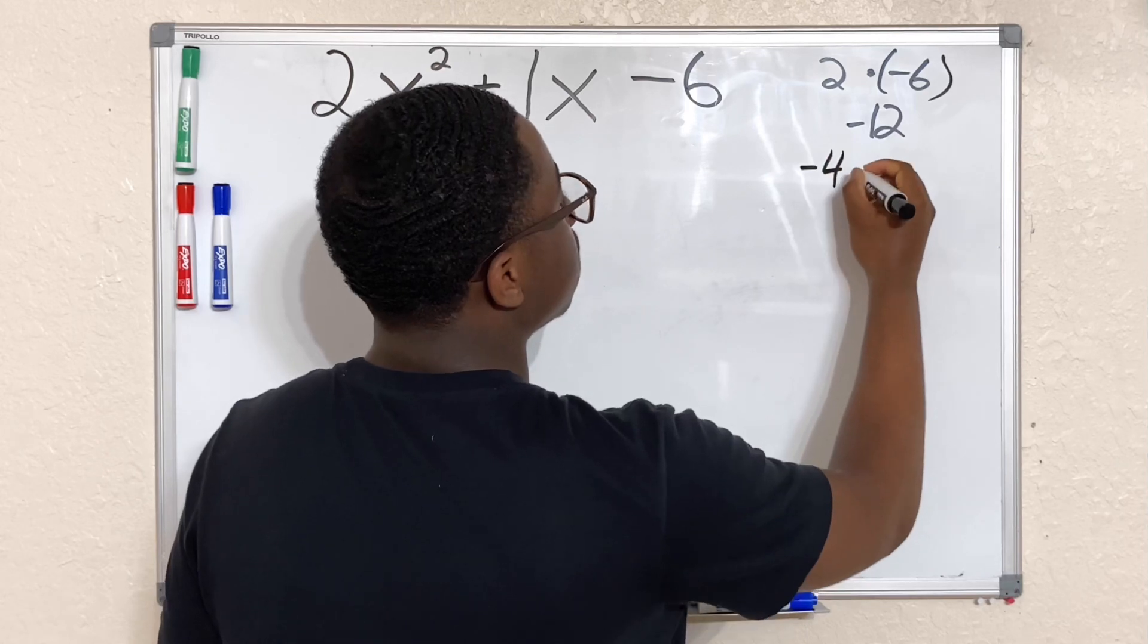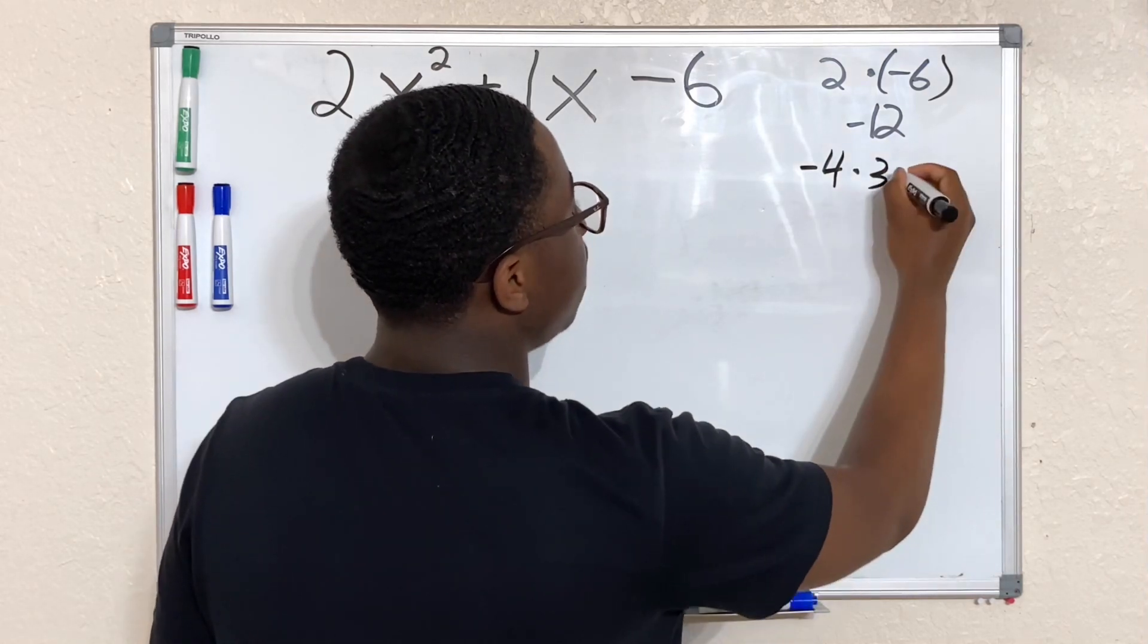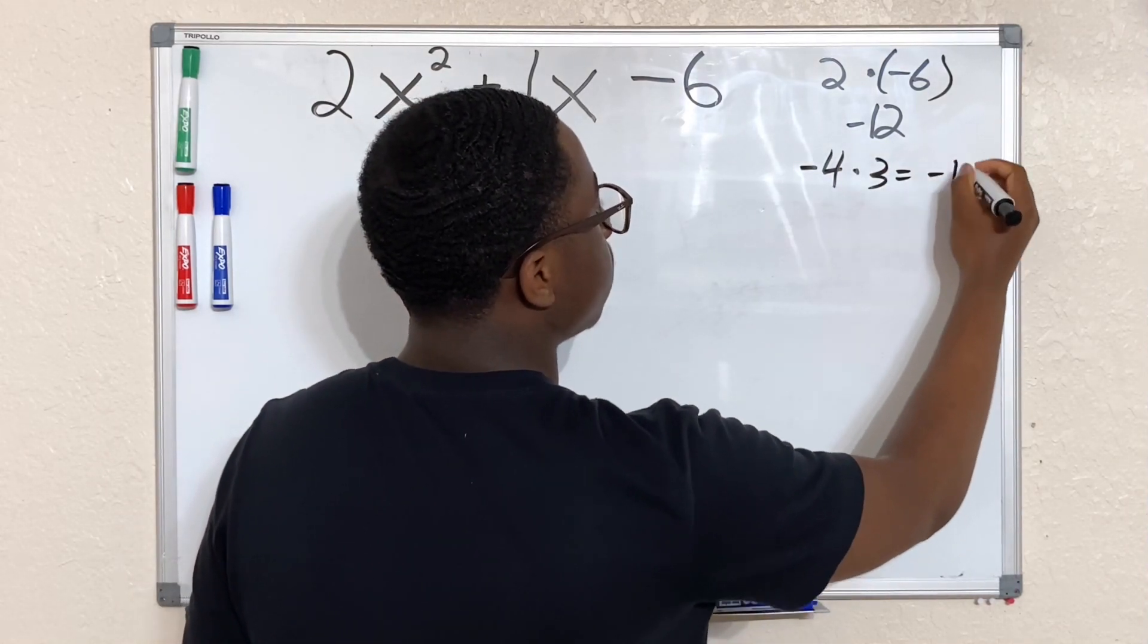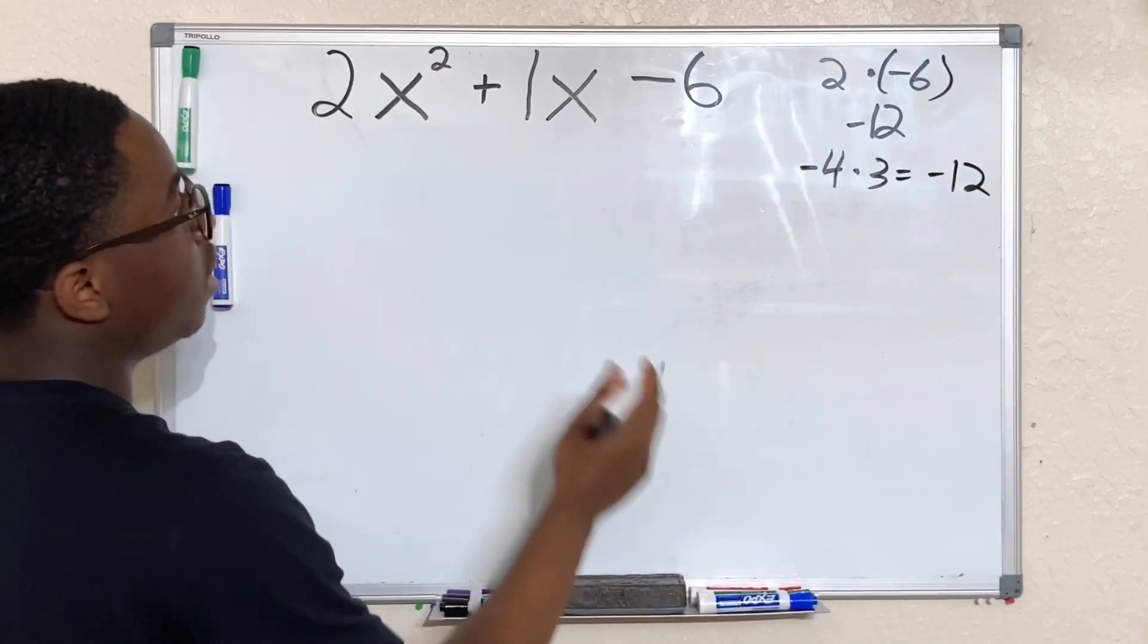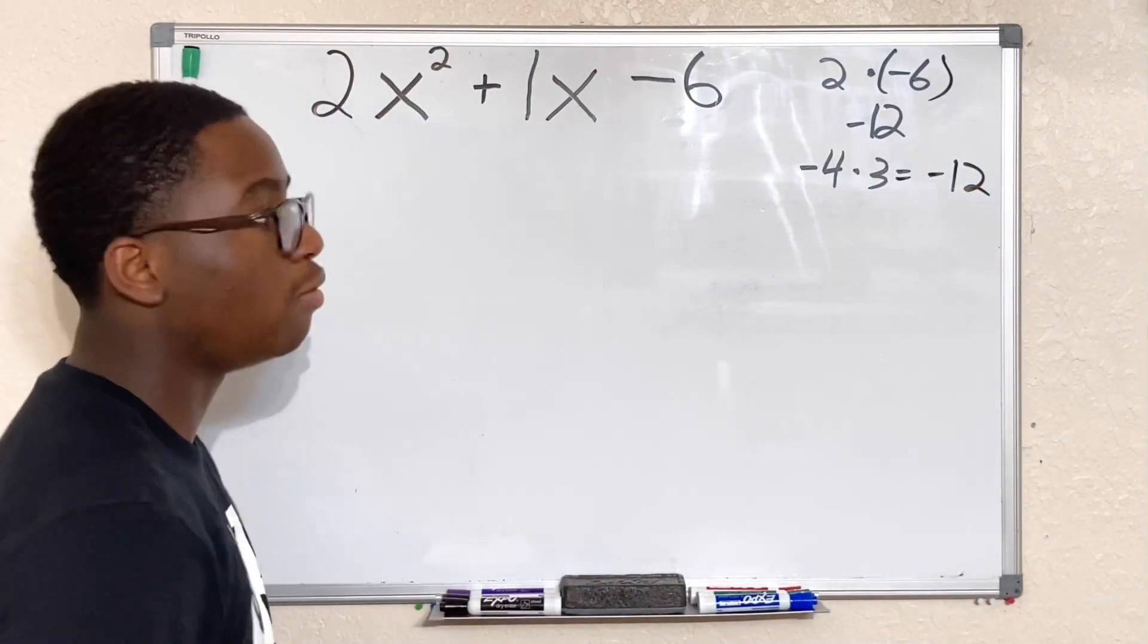-4 times 3? Well, that equals -12. However, -4 plus 3 is going to give us a -1.